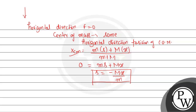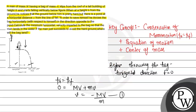The negative sign shows that the bag's position is on the opposite side of the person — in the direction away from the pond. Hope all of you understood. Thank you and best of luck!